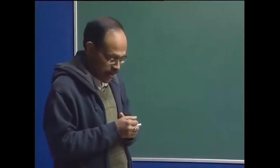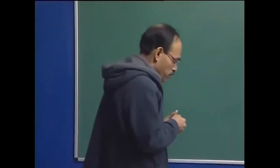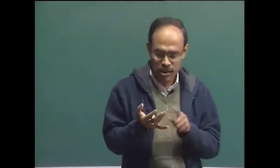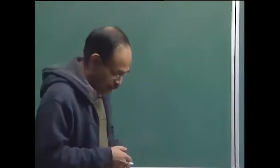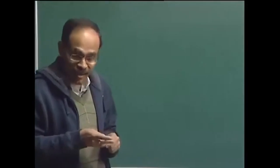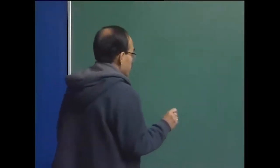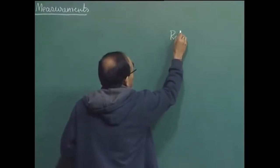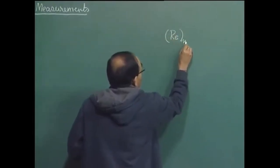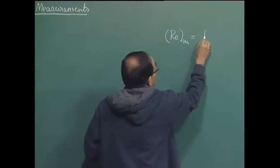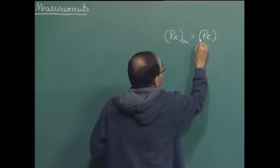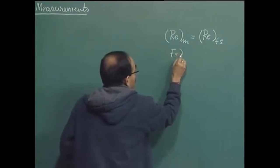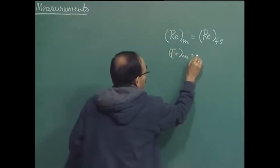I have indicated that in systems where inertial forces, gravitational forces, viscous forces, and pressure forces are only relevant, the similarity can be expressed in terms of two limiting consequences. That is, the Reynolds number in the model is equal to the Reynolds number in the full scale, and the Froude number in the model equals the Froude number in the full scale.